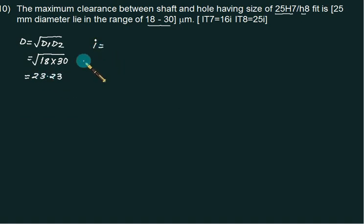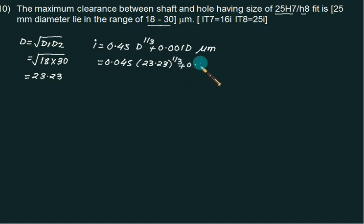Recall the formula for i is 0.45d^(1/3) plus 0.001d. This answer will come in microns. This time we have to put diameter equal to 23.23 and you have to solve this value. So we have 0.045 times 23.23^(1/3) plus 0.001 multiplied by 23.23. So this answer comes to be 1.307 microns.